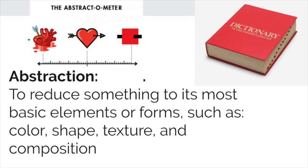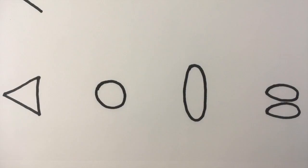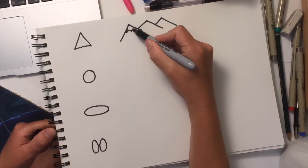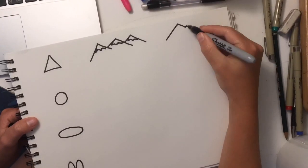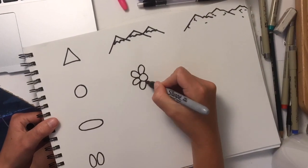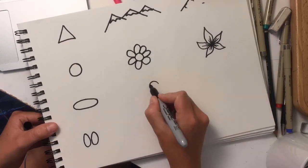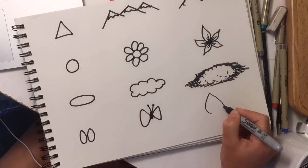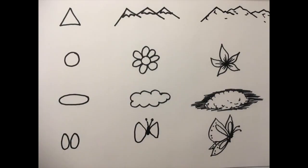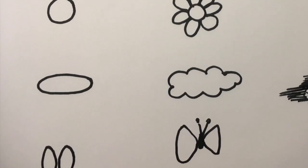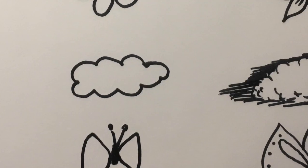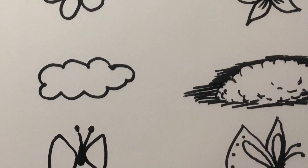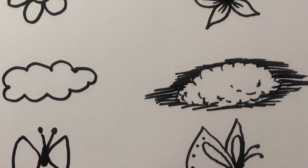Now I will demonstrate how these shapes can be turned into symbols and realistic drawings. In the cloud example, we have an oval, which has been turned into a symbolic cloud, which has been turned into a more realistic, textured drawing.